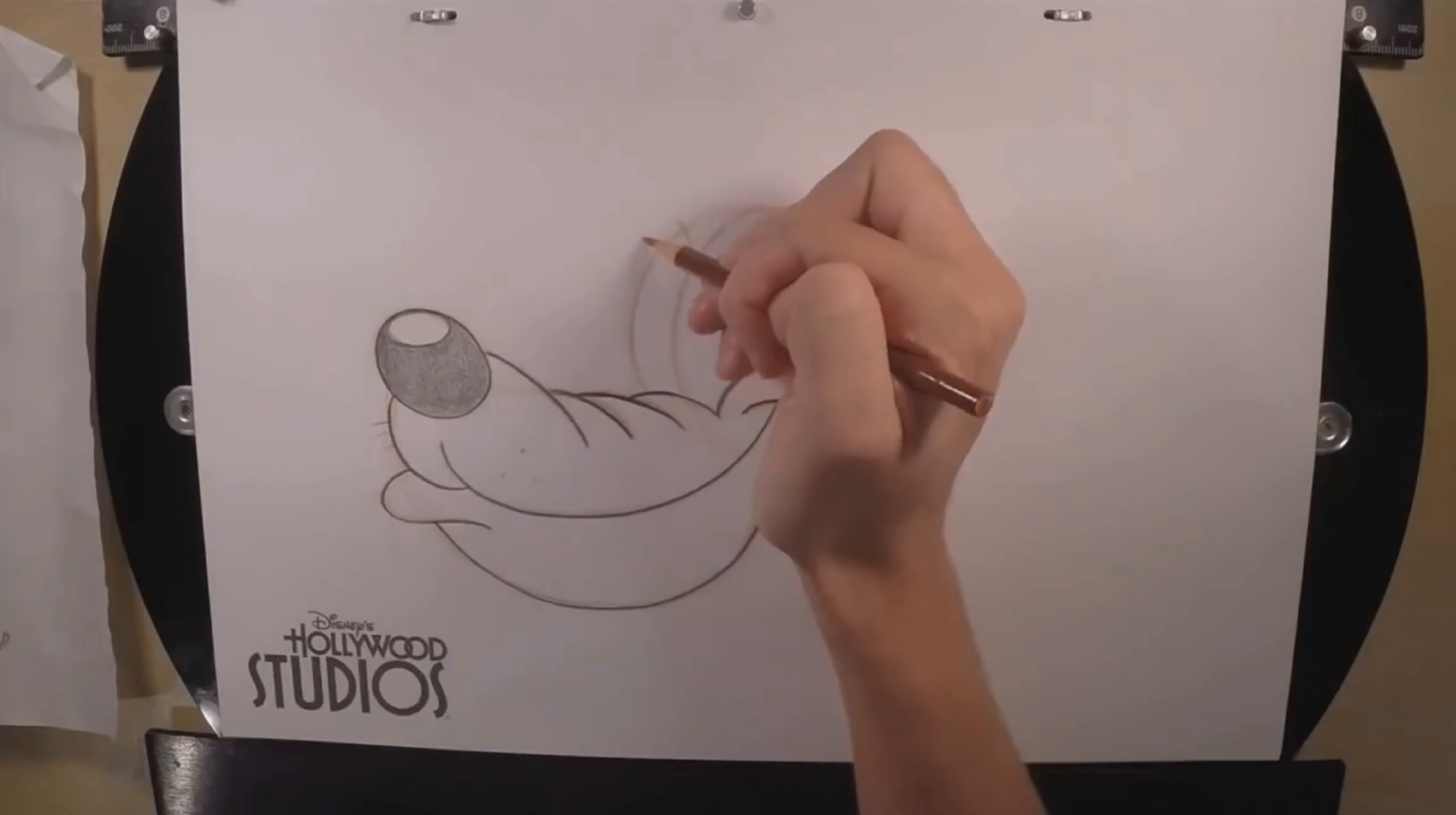Then we get the eyebrows. Eyebrows fall the same curve as the top of the eye. So we just hook above the eye there. And hook above this eye.